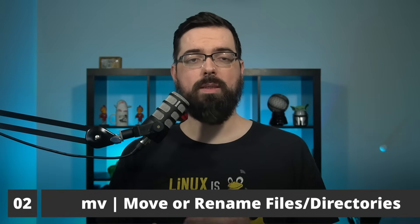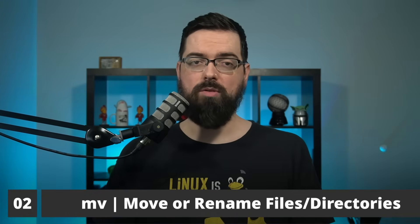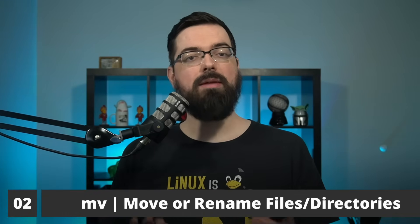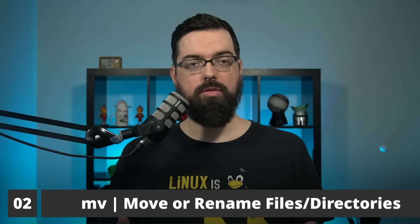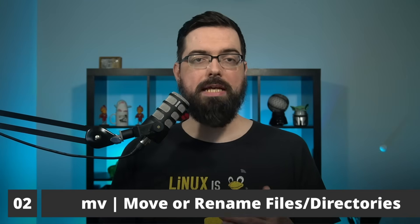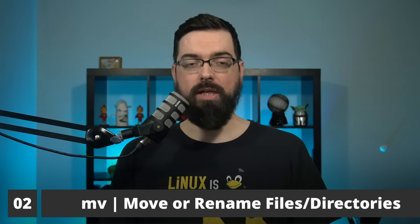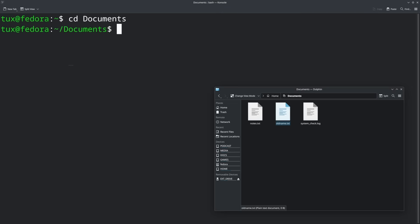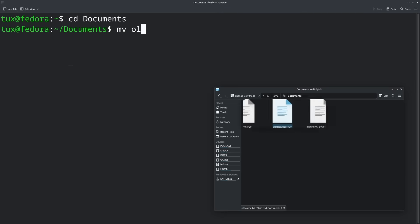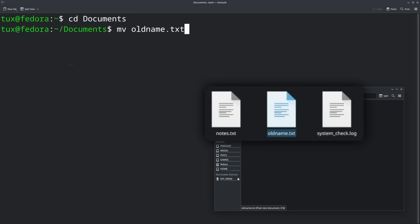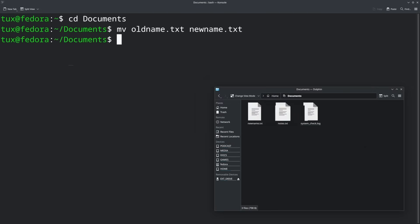In the previous video we talked about how you can move, copy, and remove files, but we didn't talk about renaming files or moving them. So let's do that now with mv. The mv command allows you to move files, and if you do it in the same folder it will do a rename instead of a move. So: mv oldname.txt newname.txt will simply rename that file because it's effectively moving it from one name to the next.